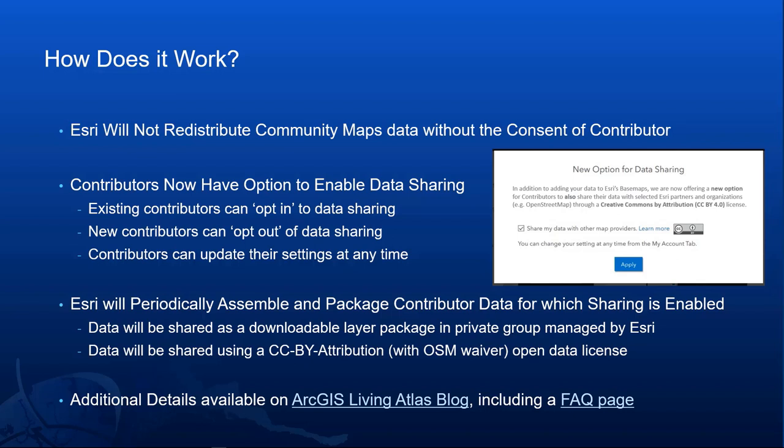In either case, contributors can update their choice in the account settings at any time. Esri will monitor the choices of our contributors and, on a periodic basis, share the latest data contributions. Esri will assemble the data and create a downloadable layer package shared via a private group in ArcGIS Online. The data will be provided under a Creative Commons CC by Attribution Open Data License, with an explicit waiver to be used in OpenStreetMap. Additional details can be found in the Community Maps data sharing article on the ArcGIS blog.